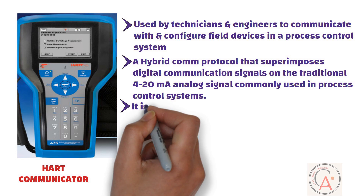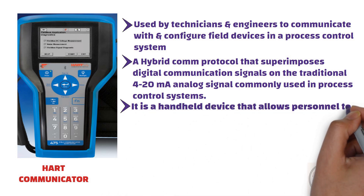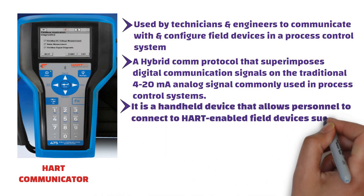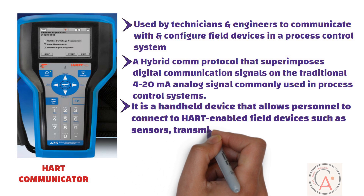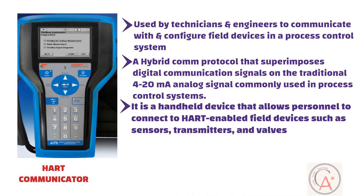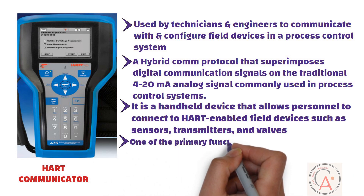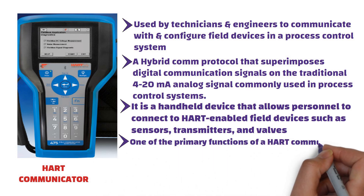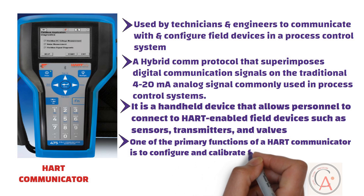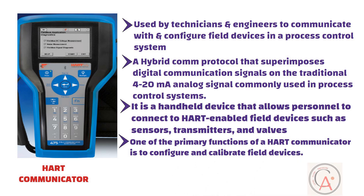A HART communicator is a handheld device that allows personnel to connect to HART-enabled field devices such as sensors, transmitters, and valves. It facilitates communication for tasks such as configuration, calibration, diagnostics, and troubleshooting. One of the primary functions of a HART communicator is to configure and calibrate field devices. Technicians can use the communicator to adjust parameters, set operating modes, and calibrate instruments remotely.